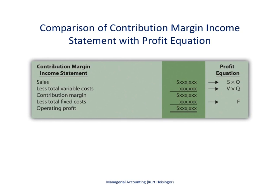Here is how we show the profit equation in a more refined way using a contribution margin income statement. Total sales equals sales price per unit times quantity sold, and total variable cost equals variable cost per unit times total quantity sold. The difference between the two — total sales minus total variable costs — equals the total contribution margin. Then we subtract total fixed costs to get operating profit.